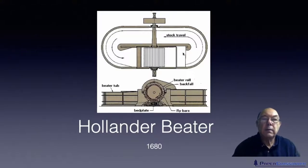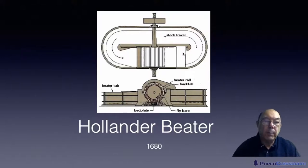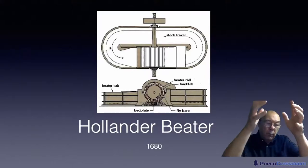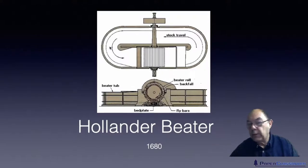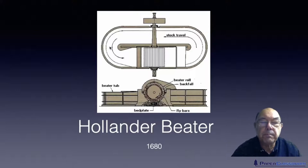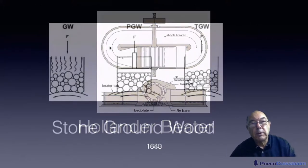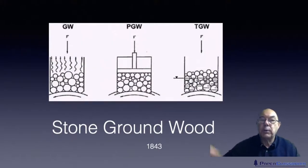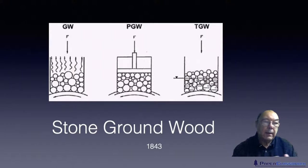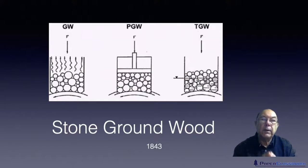The stock circulates until it's in the form needed for the product we want to make, then we stop it. There's a plug which you pull out and the water falls down to the next floor of the making house into a big tank, and then we go on to make paper or blend it with other things. The Hollander beater is one of the biggest and best inventions. However, the problem is it's a batch process, and today everybody wants to move to continuous processes — that's why you rarely see beaters around anymore.